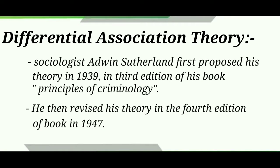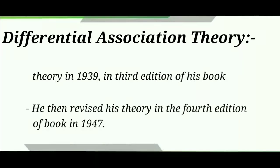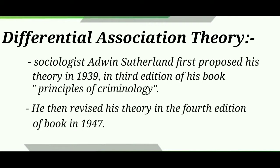Differential association theory and social learning theory in criminology. This theory was given by sociologist Edwin Sutherland in his book Principles of Criminology, third edition, in 1939. He gave nine major principles on how people learn criminal behavior, then revised his theory in the fourth edition in 1947. Sutherland clearly defined how crime occurs, how a person engages in crime, and how a person becomes criminal.